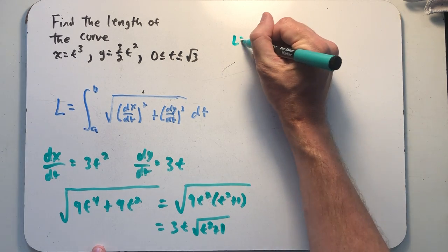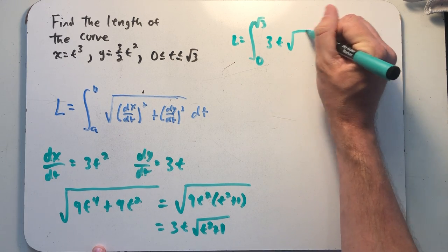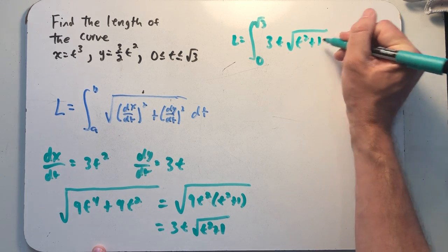So the length of this curve is the integral from 0 to root 3 of 3 times t, times the square root of t squared plus 1 dt.